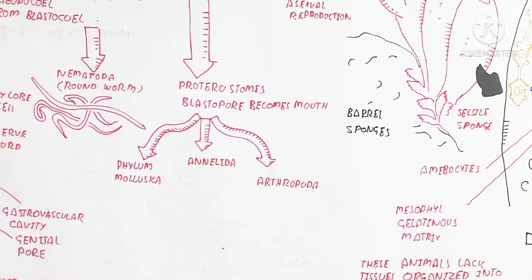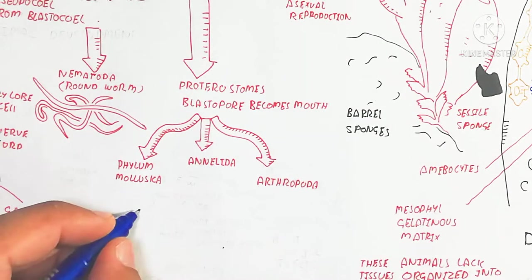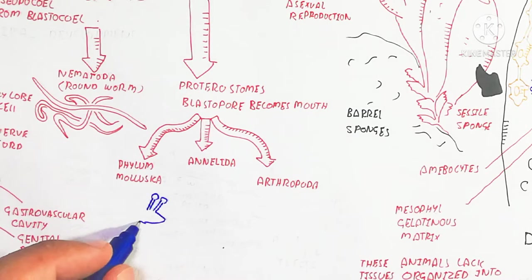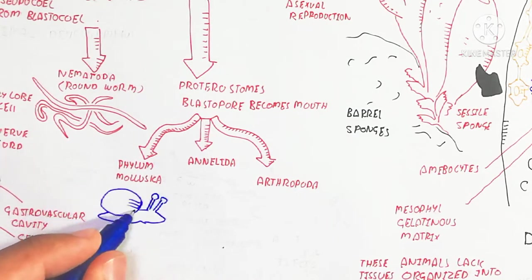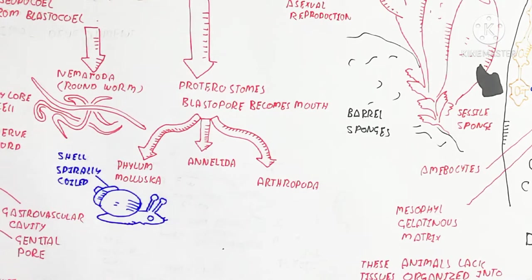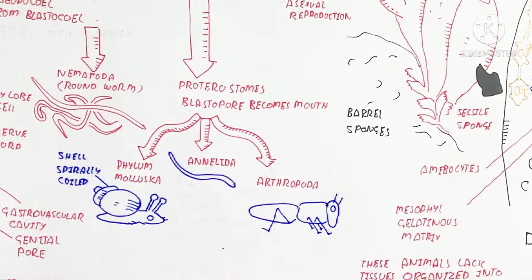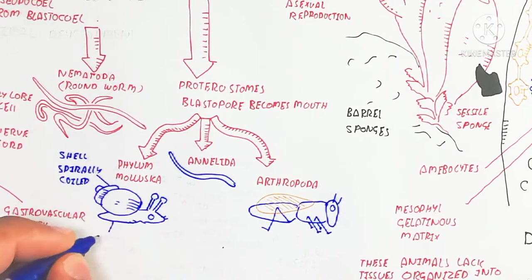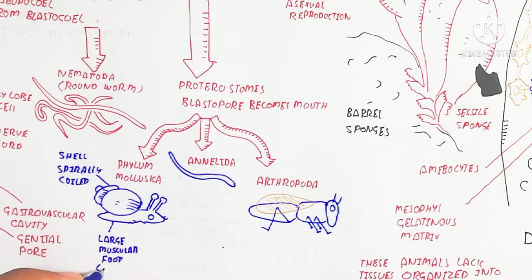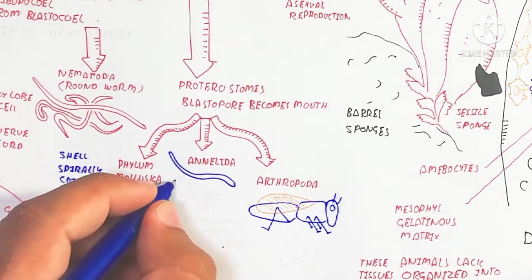This division occurs during the embryological stage. These phyla include three: phylum Mollusca, phylum Annelida, and phylum Arthropoda. We will discuss each one. First, phylum Mollusca contains a snail and slug, which have a spirally coiled shell as an exoskeleton.